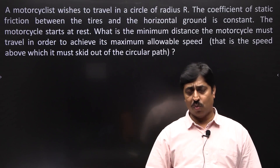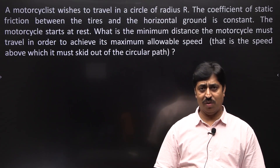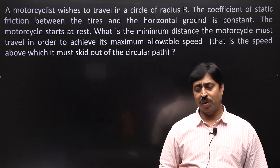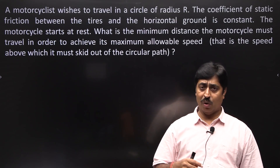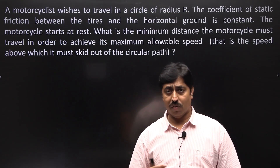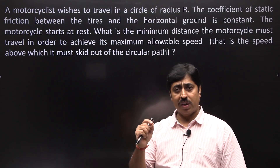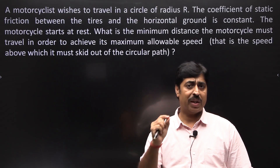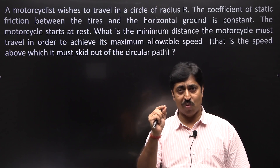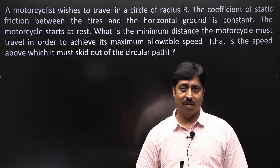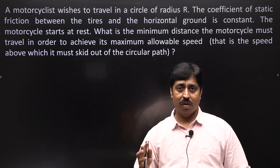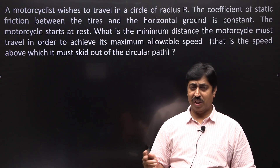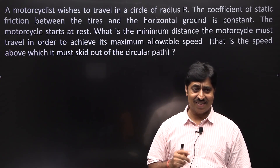There is a circular track on which you want to ride a motorcycle. You start from rest, go on accelerating, and you all must know there is a maximum allowed speed beyond which you will skid out. So what is the minimum distance you need to travel on that circle to obtain that maximum speed? Those who want to give it a try, go ahead. For the rest, I will explain the physical concept first and then we can do the mathematics.